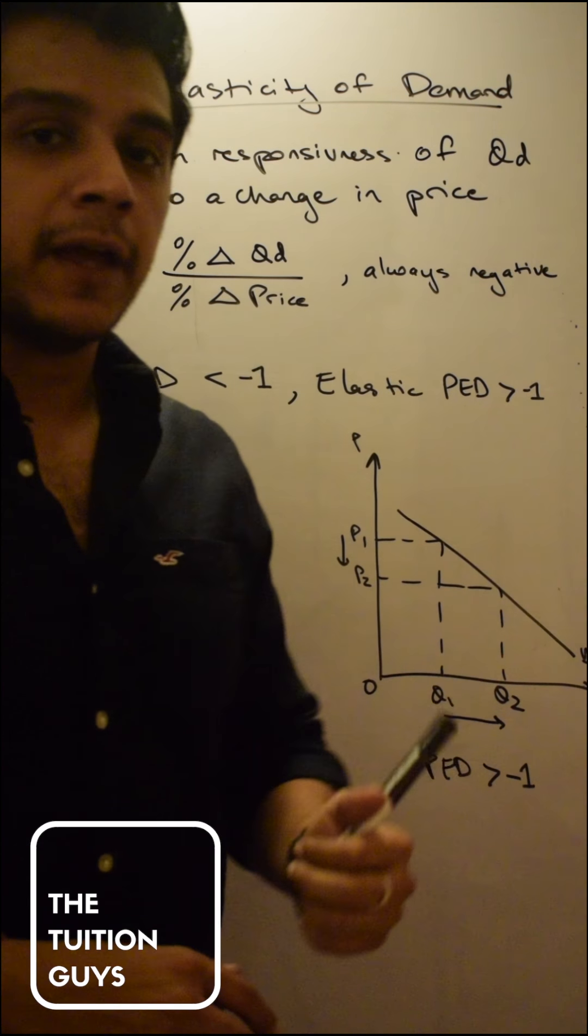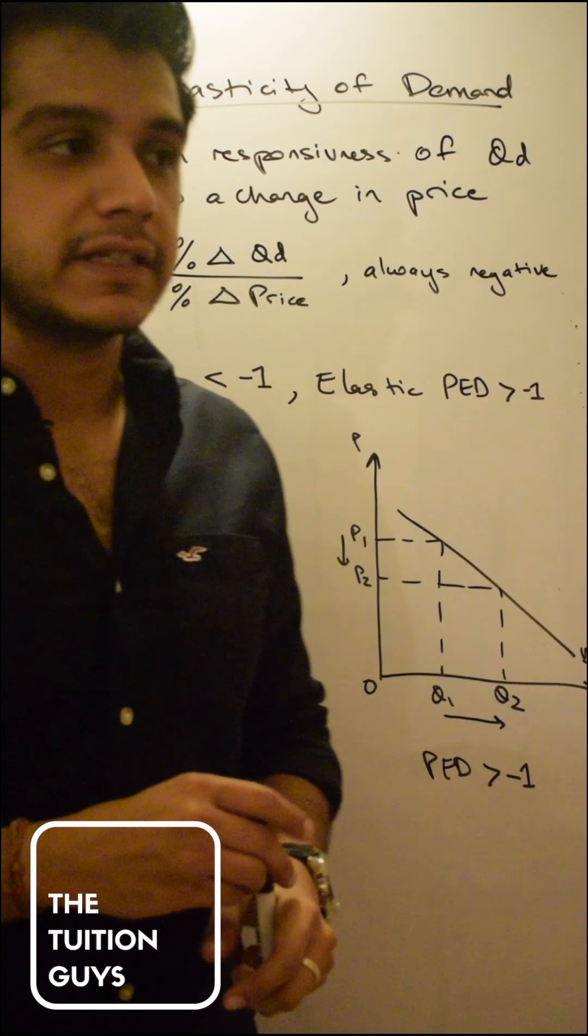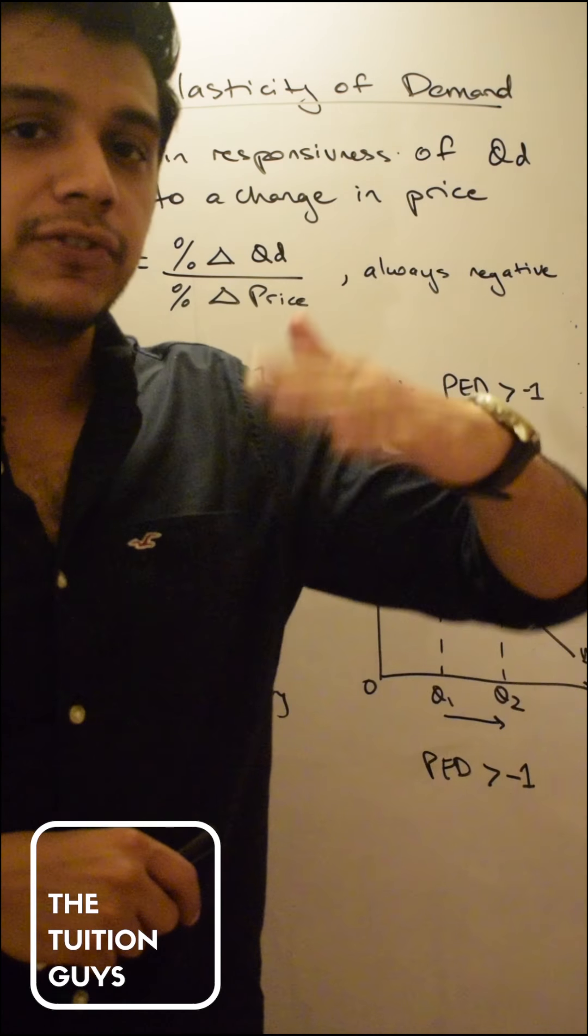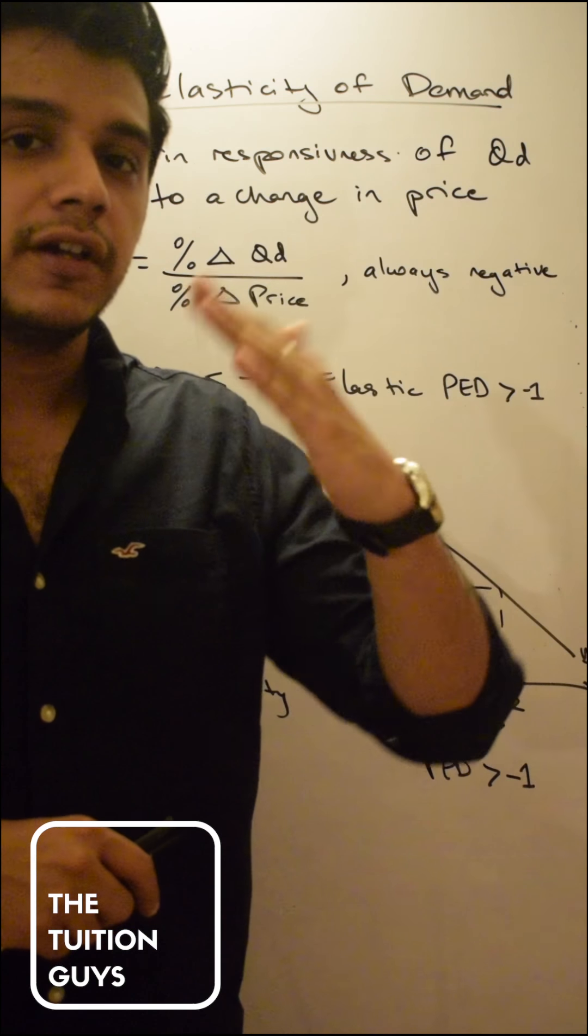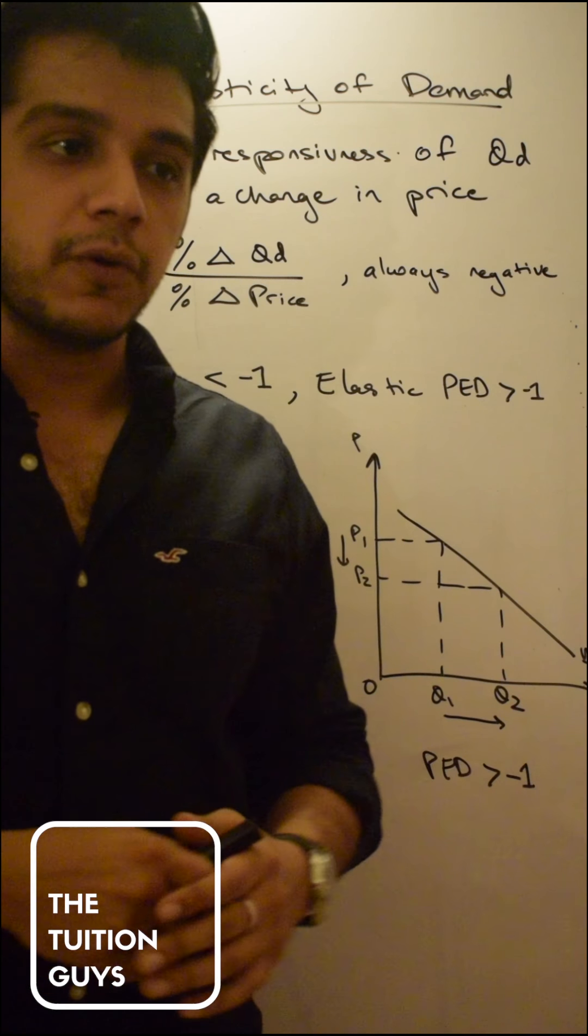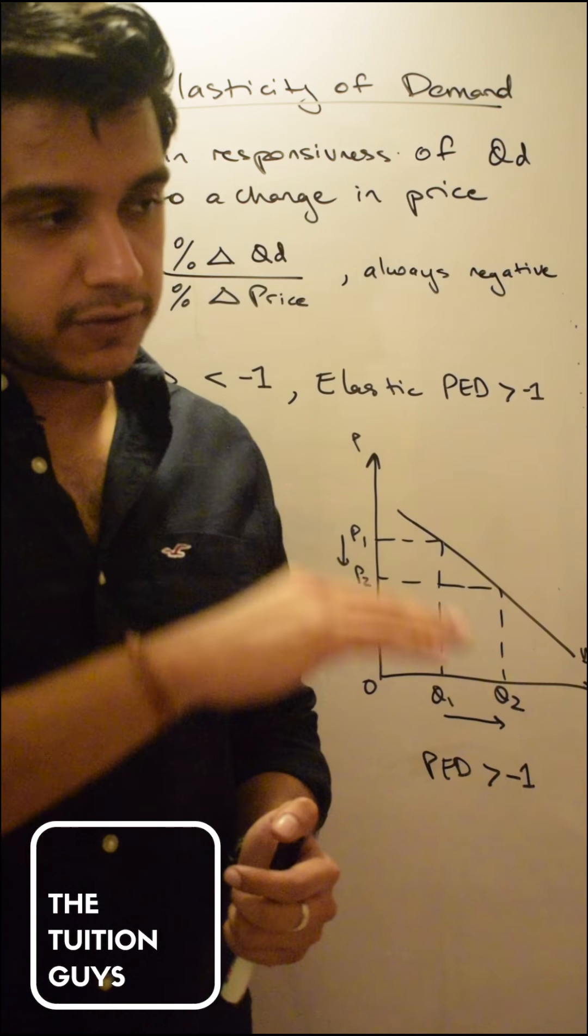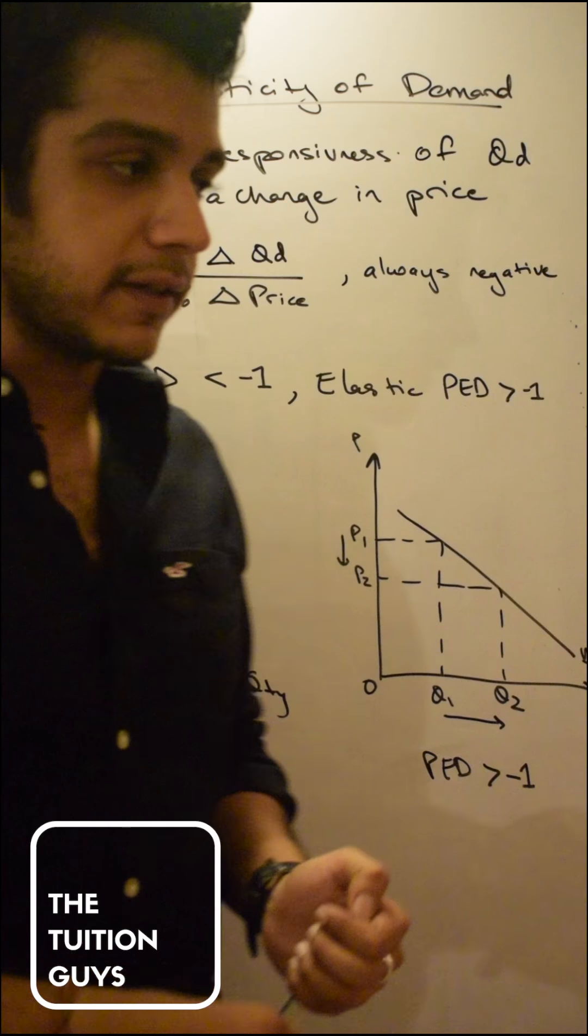The next chapter is called price elasticity of demand and what we're going to be talking about is basically measuring how steep or how narrow the demand curve should be. To what extent should I actually be drawing a straight line on my demand curve or should I be drawing a horizontal line on my demand curve?